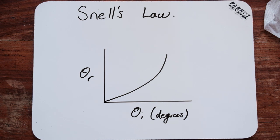But interestingly, what happens is that when you measure incident light rays and refracted light rays, you end up getting a relationship such as this. It's an exponential curve.